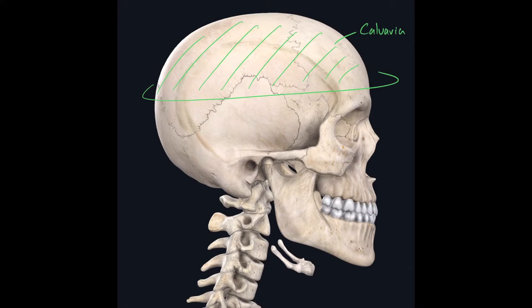Just inferior to the calvaria, we find a structure located on the lateral aspect of the head, often found in the buccal region. We learned that this process is called the zygomatic process of the temporal bone, and this one being the temporal process of the zygomatic bone. However, when we refer to this structure as a whole, it's just called the zygomatic arch.